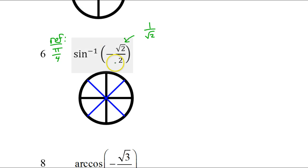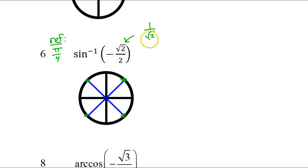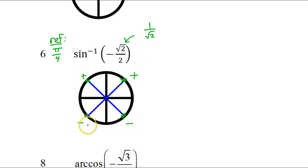Looking at this unit circle, these are the four angles that have a reference angle of pi over 4. All of these are going to give me an answer of 1 over radical 2. However, these two will be positive 1 over radical 2 and these two will be negative 1 over radical 2, because the sine function is the y value on the unit circle. The y values are positive here and negative down here.